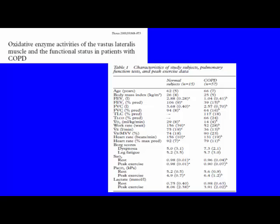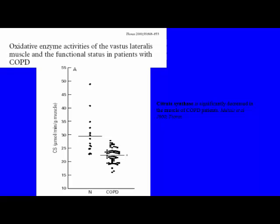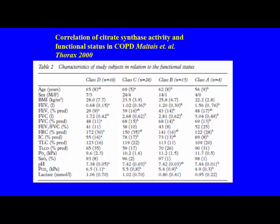A study published in Thorax in 2000 examined the activity of citrate synthase — a key Krebs cycle enzyme responsible for oxygen metabolism — using muscle biopsies from the vastus lateralis muscle. They found that COPD patients had decreased citrate synthase levels compared to normal subjects. COPD patients were then stratified into four functional classes based on peak VO2 max from a bicycle exercise test: Class A (≥20 mL/kg/min, no impairment), Class B (16–20, mild), Class C (10–16, moderate), and Class D (<10, severe impairment).